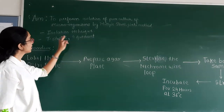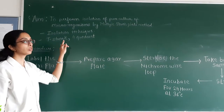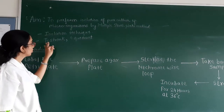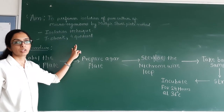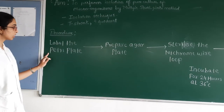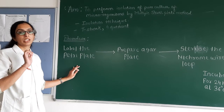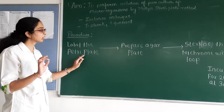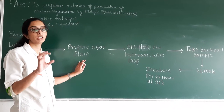The streak plate technique is an isolation technique in addition to pour plate technique and spread plate technique. Various kinds of streak plate techniques are used, like T-streak technique and four-quadrant streak plate technique. The procedure: the very first step is to take a sterile petri plate, label it with the direction of streaking and the quadrants. The second step is to prepare the agar plate by pouring agar into the petri plate and allowing it to solidify.